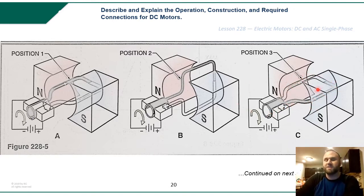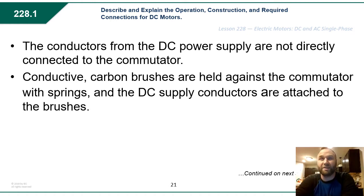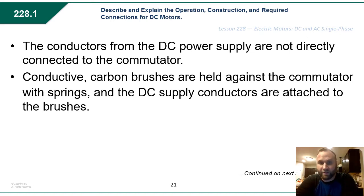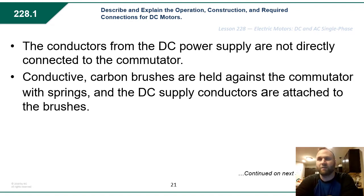The conductors from the DC power supply are not directly connected to the commutator — if they were, they would get tangled up and it wouldn't work. The commutator needs to be able to spin freely yet still receive electrons from the source. So conductive carbon brushes are held against the commutator with springs, and the DC supply conductors are attached to the brushes. This allows electrons to flow into the commutator through the loop without the fixing of wires to the loop itself, allowing it to spin freely.